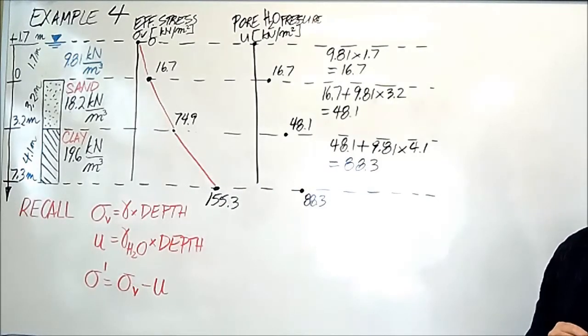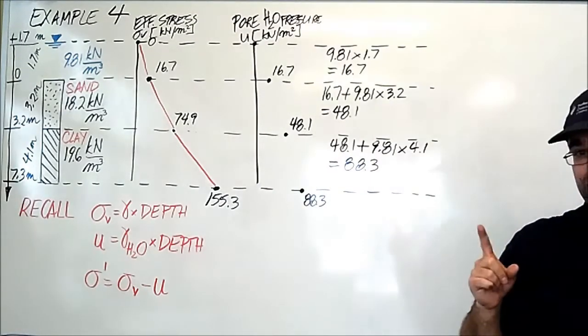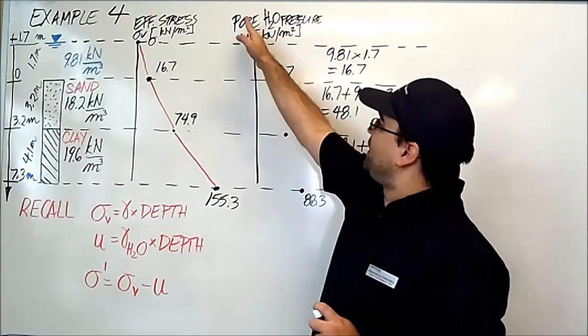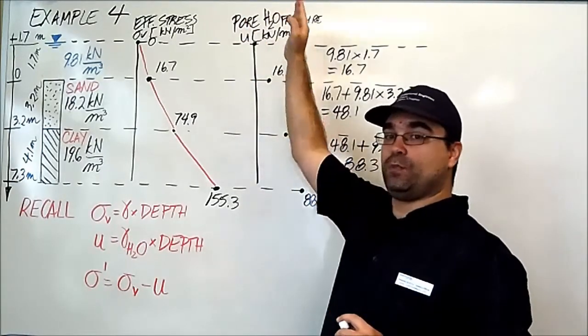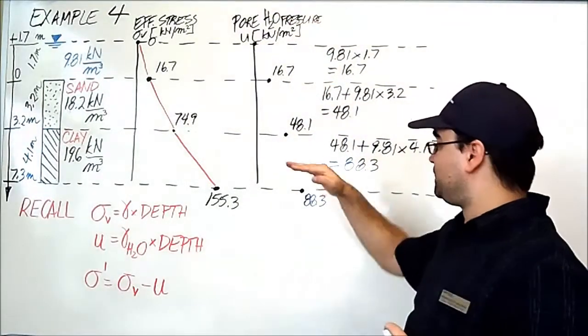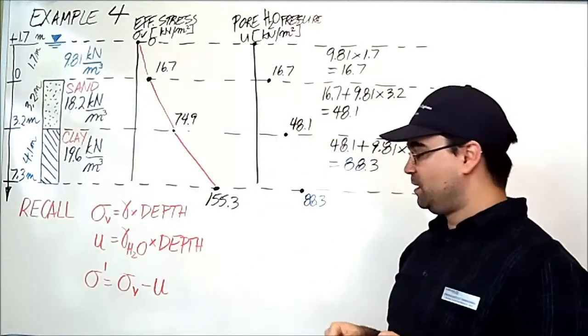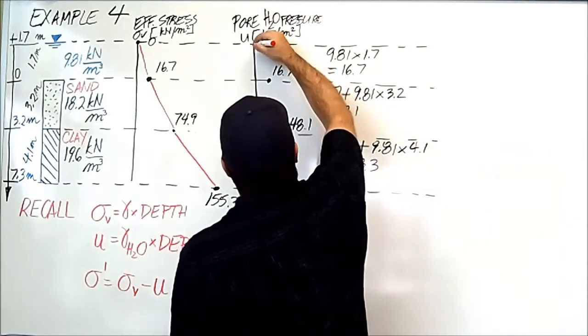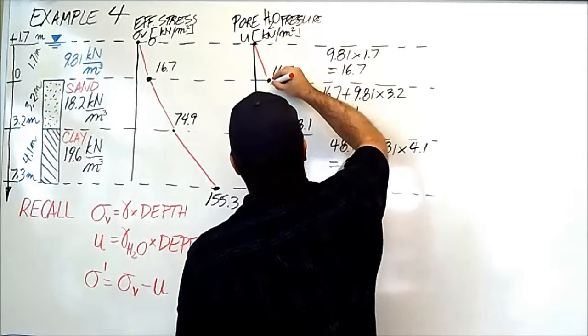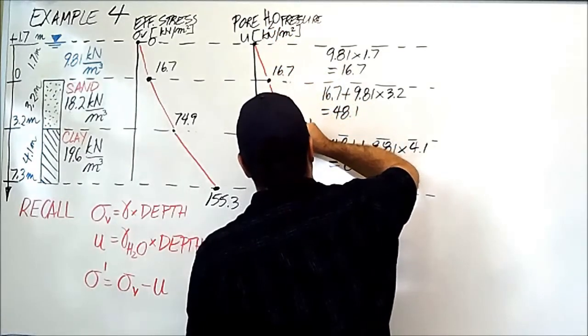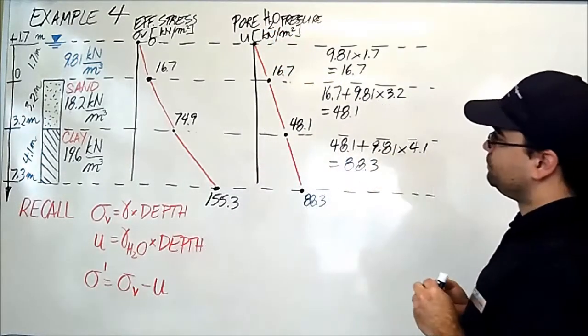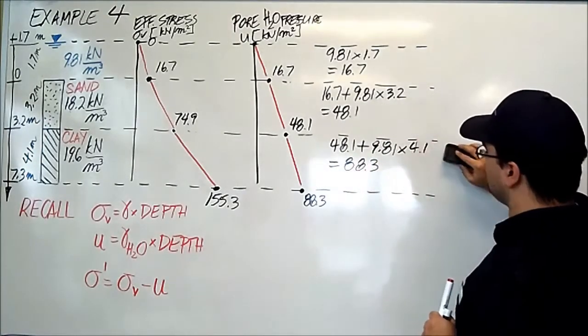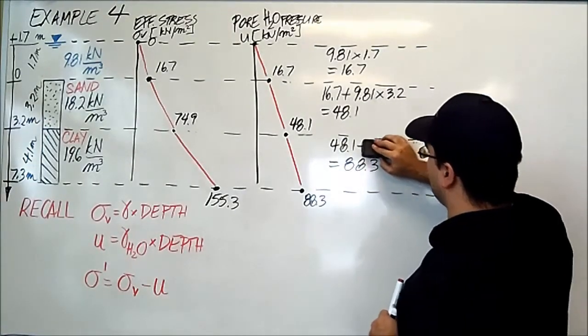Now I'm going to connect these points with a straight line. And don't forget, as we covered in example 3, this is the same straight line with the same slope because the density of water throughout doesn't change, it doesn't change from layer to layer. I'm going to erase these calculations for clarity.